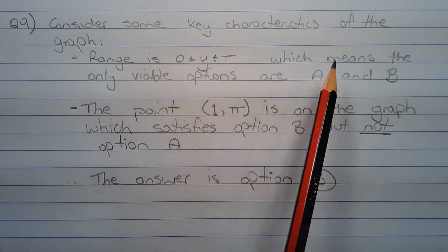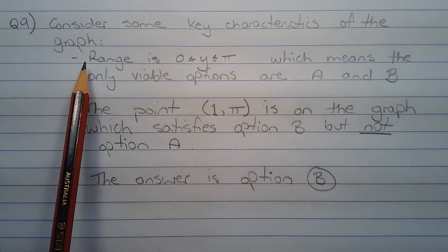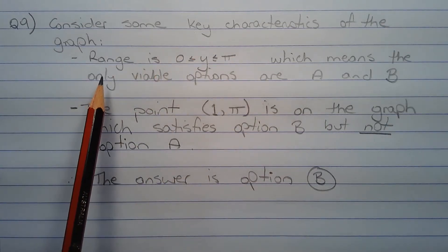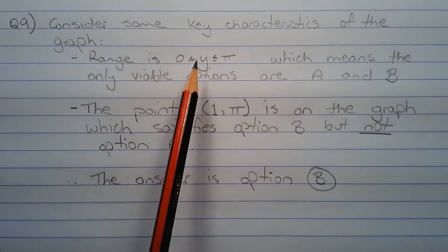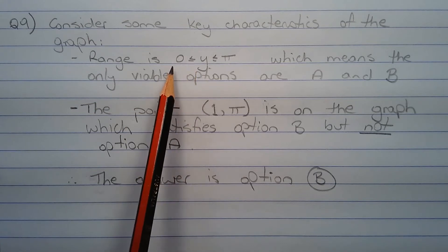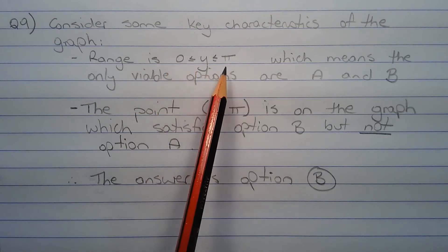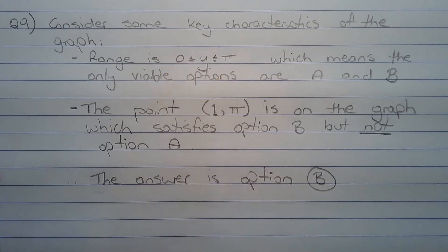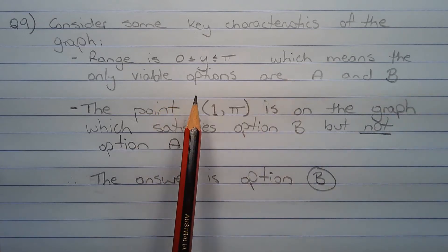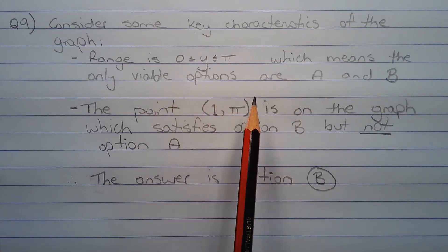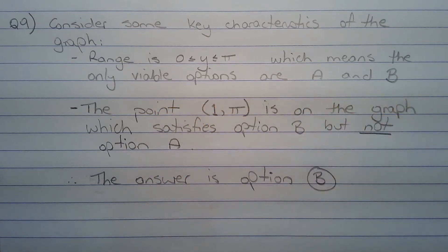Consider some key characteristics of the graph. The first one is the range. The range is y is greater than or equal to zero and less than or equal to pi, which means no part of the graph is under the x-axis. This means that the only viable options are a and b.